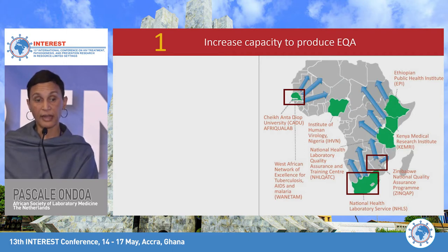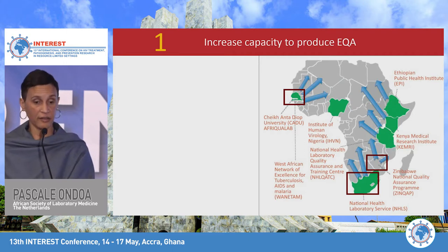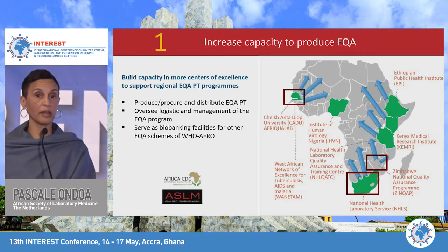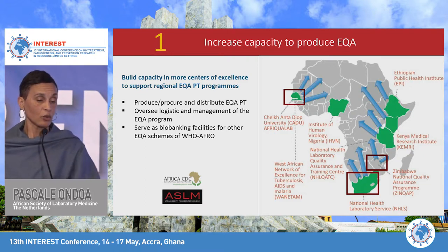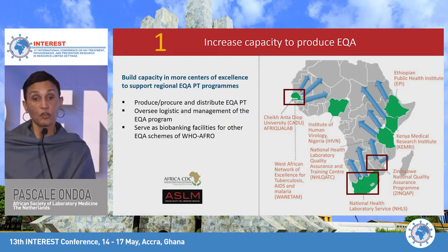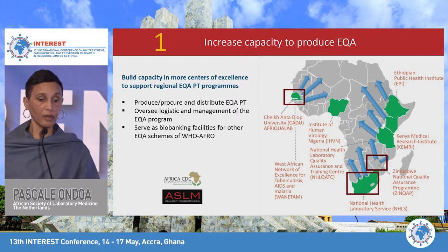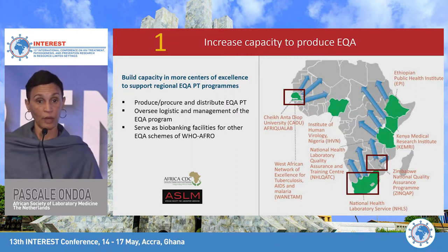Highlighted are the University Check in Senegal, NHLS in South Africa, and Zimbabwe — they are already producing EQA for CD4, viral load, and EID. This capacity can expand so that EQA programs become regional proficiency testing programs. These facilities could also help other EQA programs from WHO AFRO — for example for measles or meningitis — by serving as biobanks.